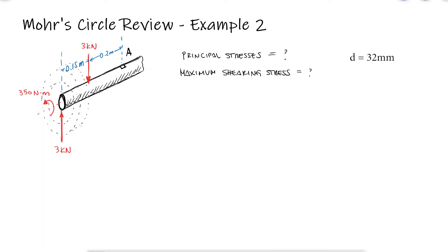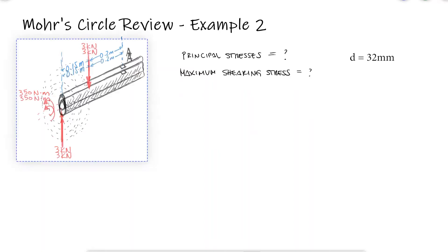This is the second example for the main video about the Mohr Circle review, so if you haven't watched that or the first example, the links to the videos are in this video's description. We'll use Mohr Circle to find the principal stresses and the maximum shearing stress, and for that we need the stress state element.